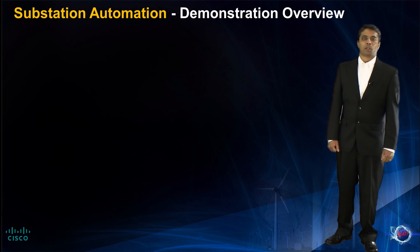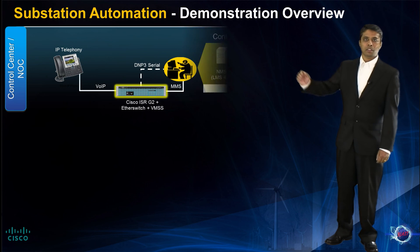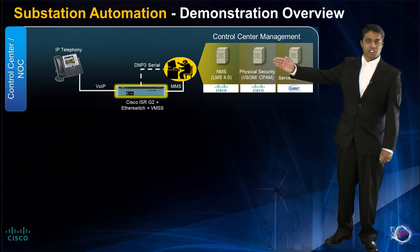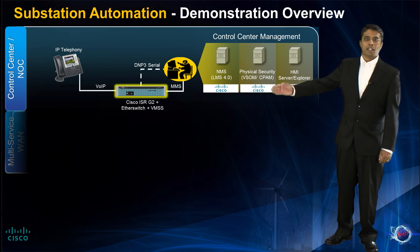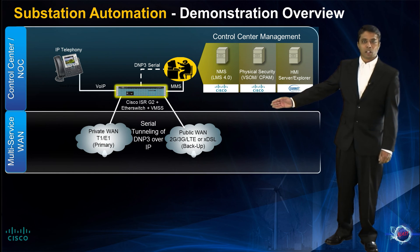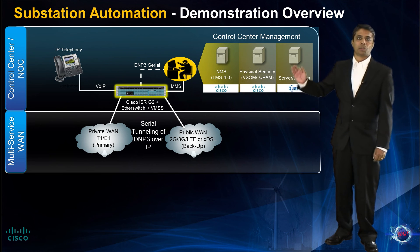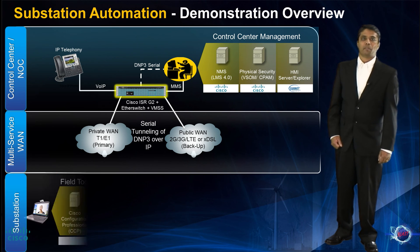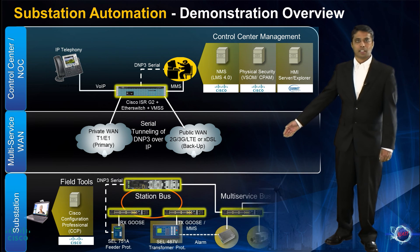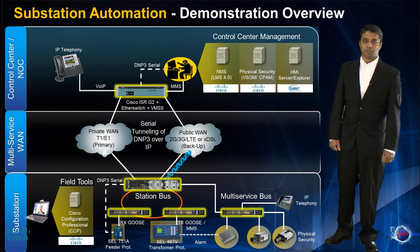The system is broken into three functional tiers: the control center or NOC tier where utility and management applications are hosted; the wide area network tier that provides the backhaul of communications from the substation to the control center; and finally, the substation itself. Now, let us take a closer look at each tier.